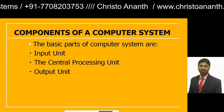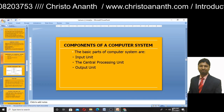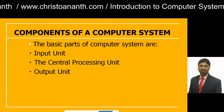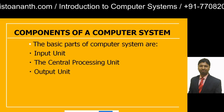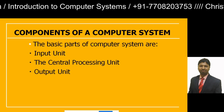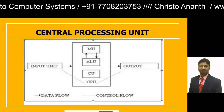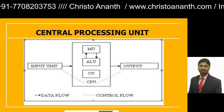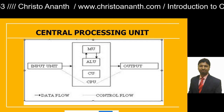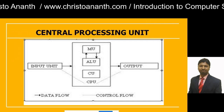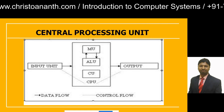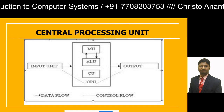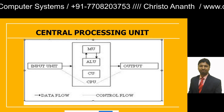The basic components of a computer system are the input unit, central processing unit, and output unit. This is the block diagram of the CPU. The input unit connects to the CPU, which contains the memory unit, arithmetic logic unit, and control unit. Data flow and control information are processed in the CPU, and then the output is produced.